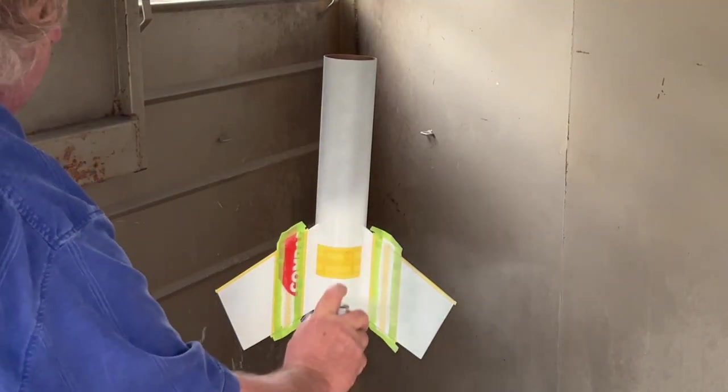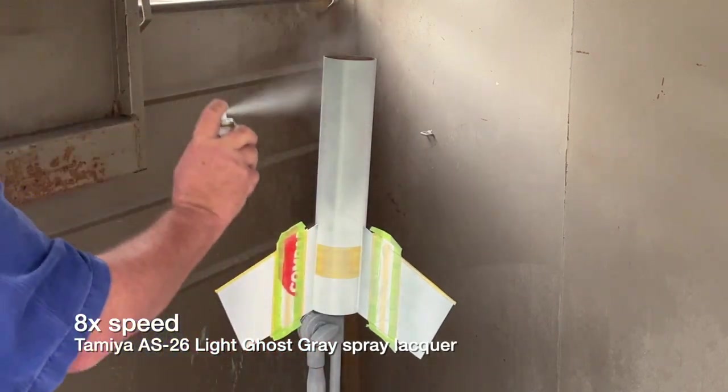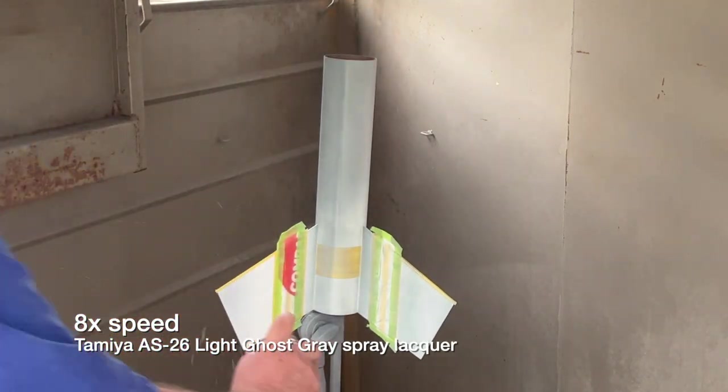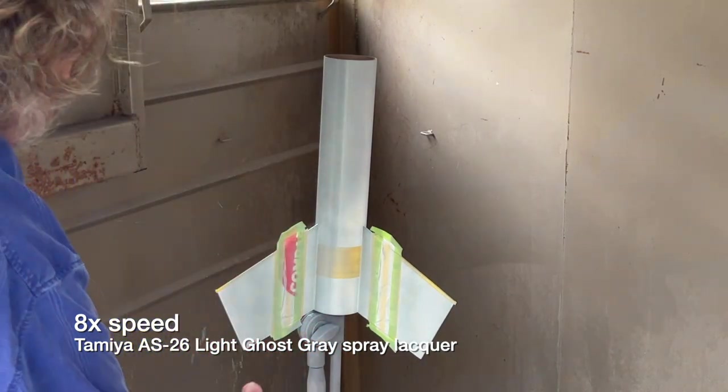We are back in the paint booth to apply the light ghost gray belly coat. Three or four light coats here should do the trick, allowing about seven minutes between each coat.